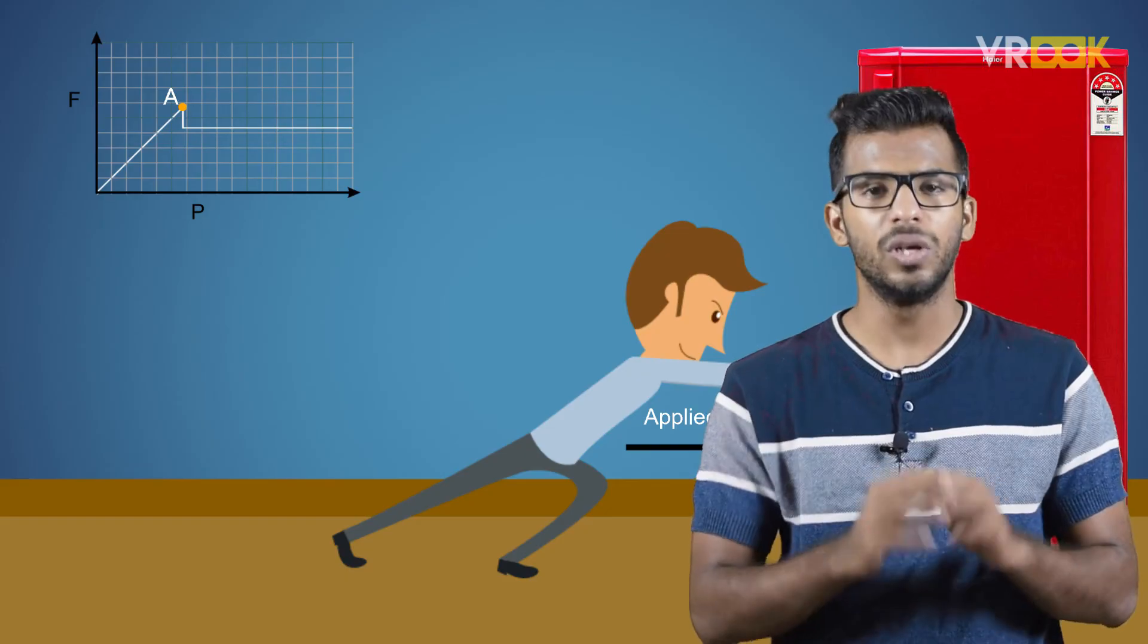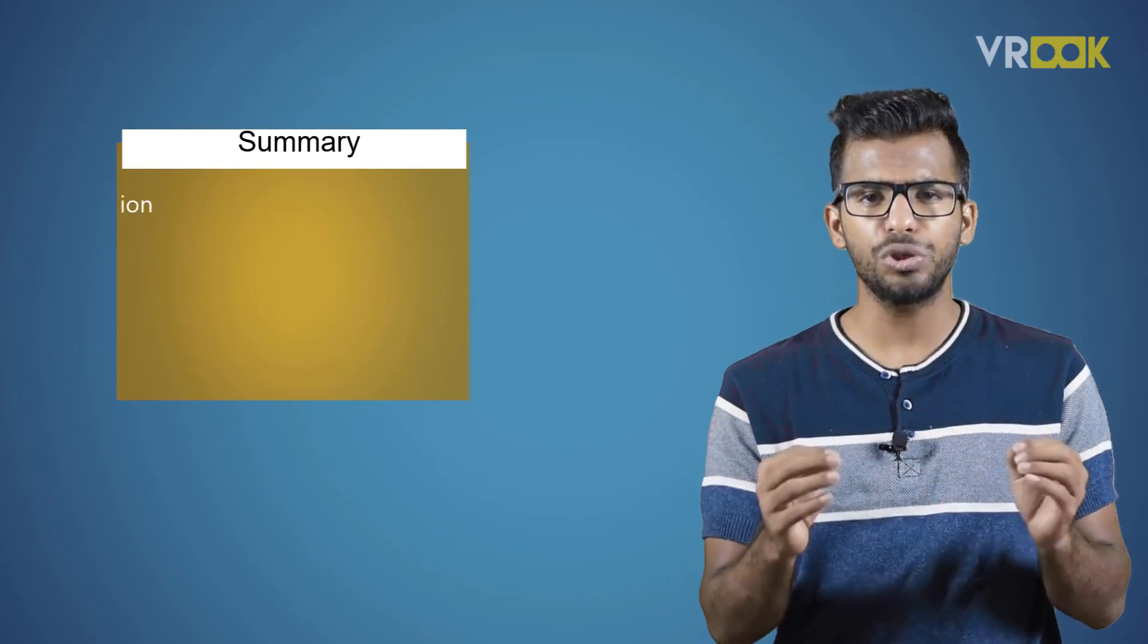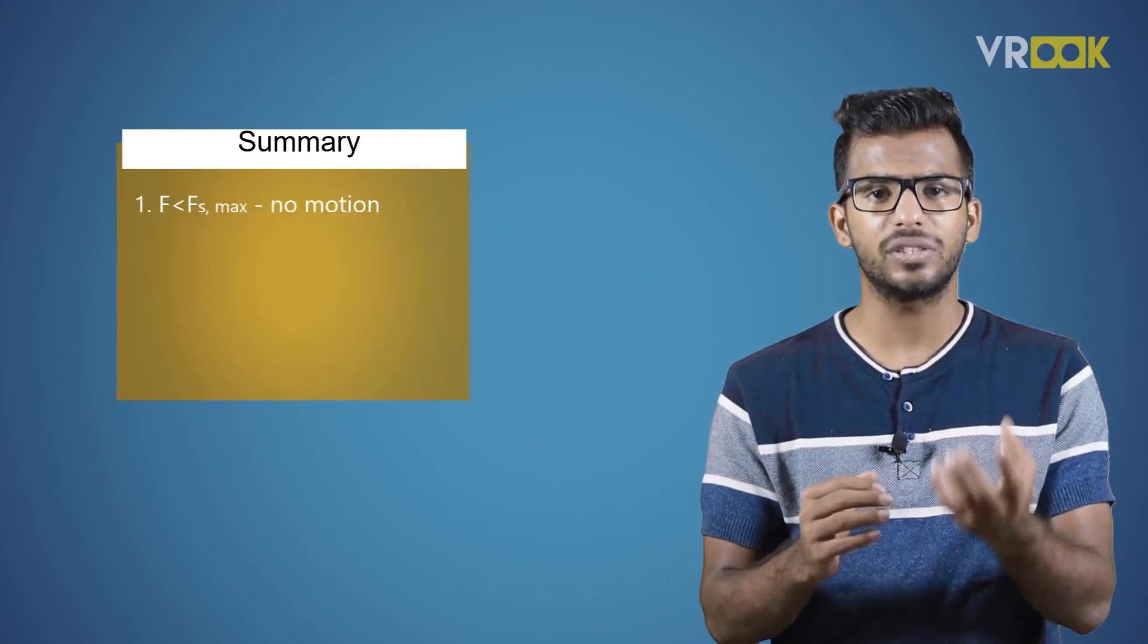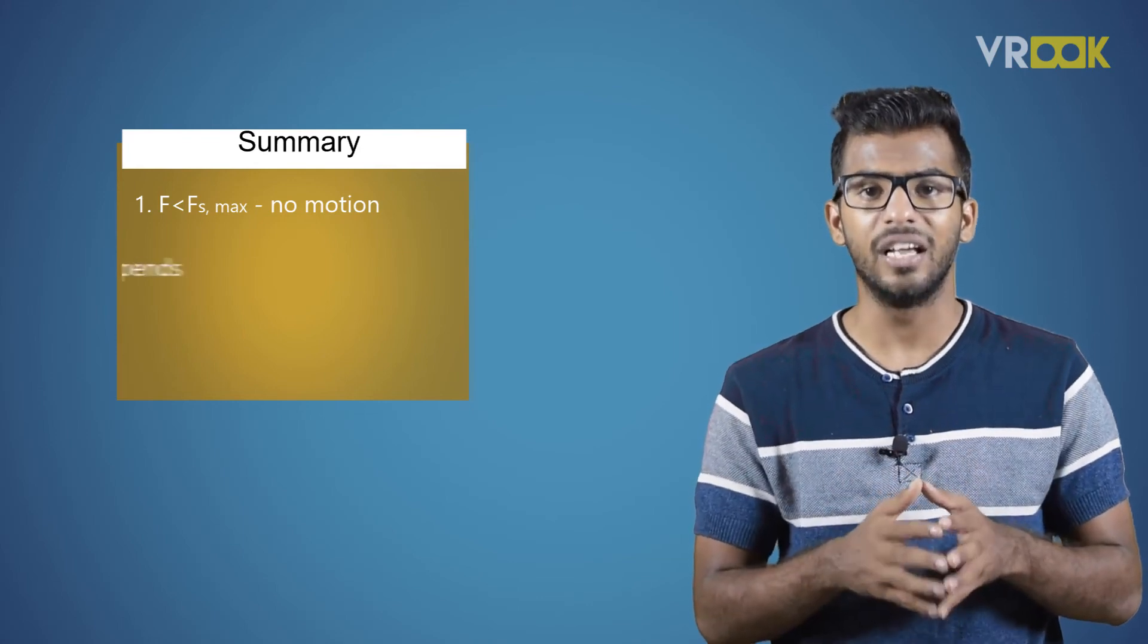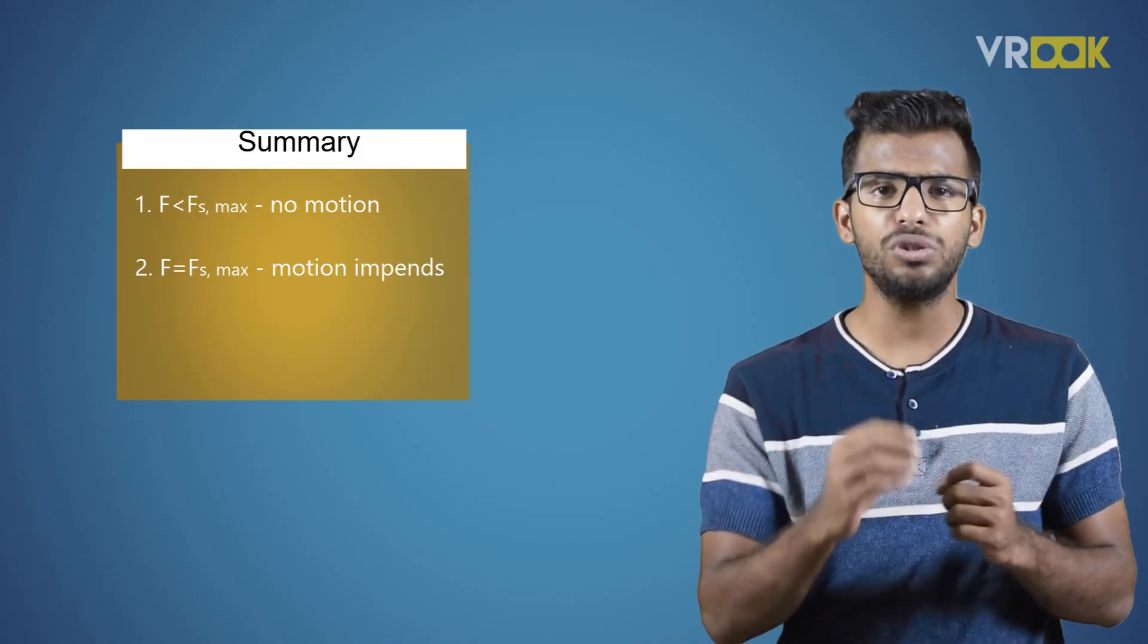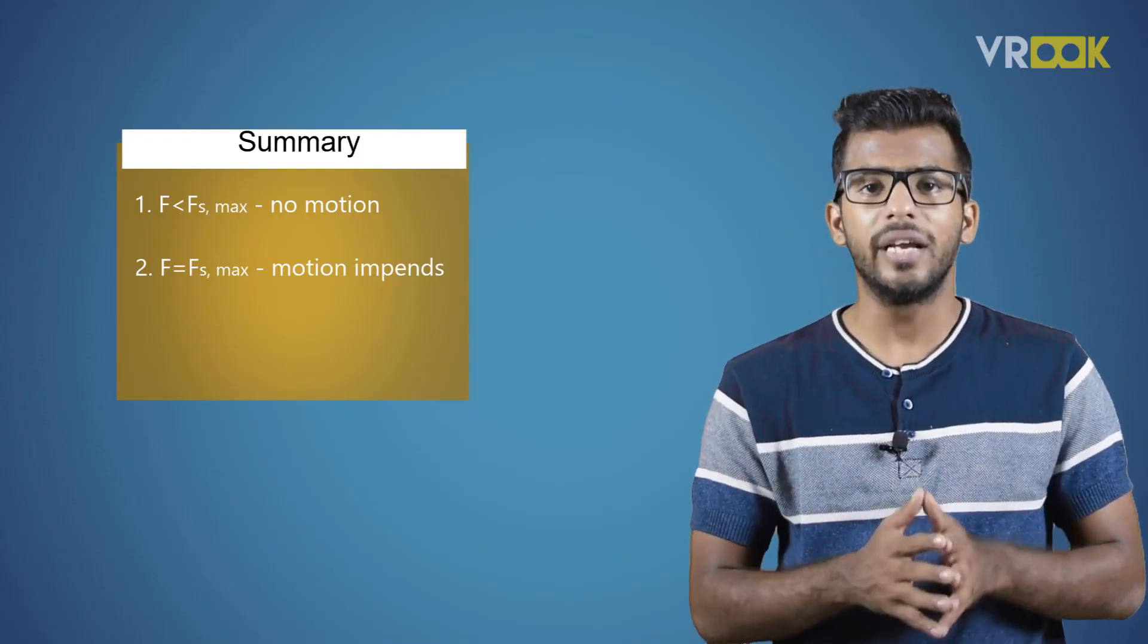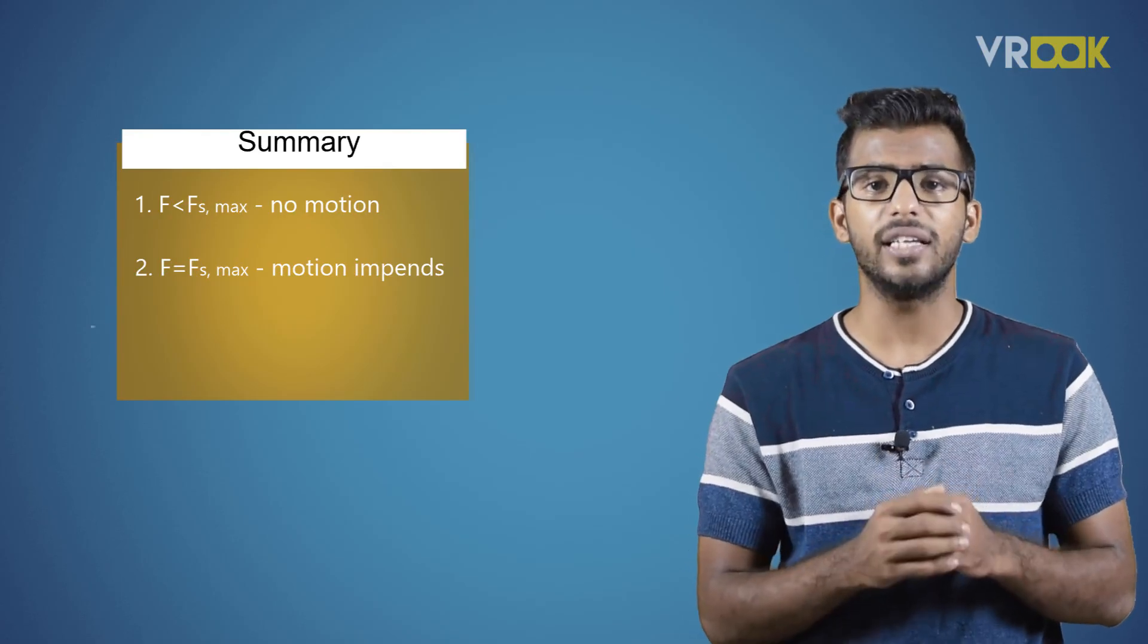To sum up, we learned that no motion occurs when applied force F is less than the limiting friction FS max. When the applied force is equal to the limiting friction, the motion is about to start—it is at the point of impending motion. And finally, when the applied force F becomes greater than the limiting friction FS max, the object will move.